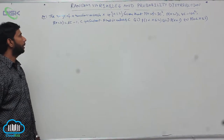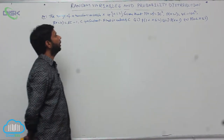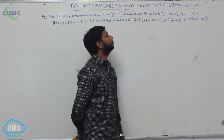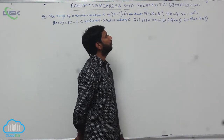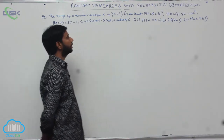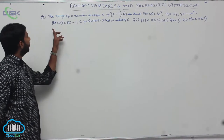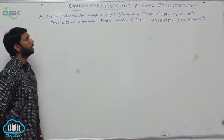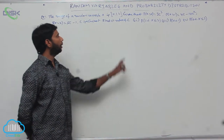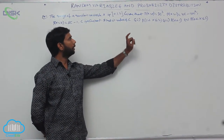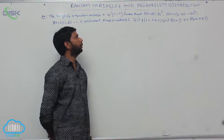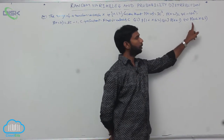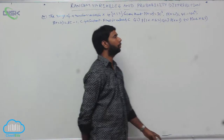The range of a random variable X is {0, 1, 2}, given that P(X=0) = 3C³, P(X=1) = 4C − 10C², and P(X=2) = 5C − 1, where C is a constant. Find the value of C, and then find P(1 < X ≤ 2), P(X < 1), and P(0 < X ≤ 3).